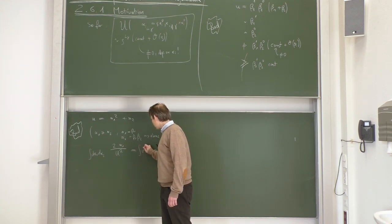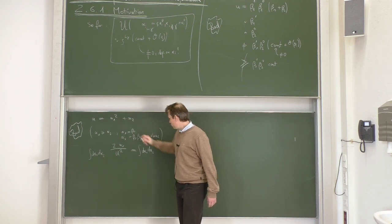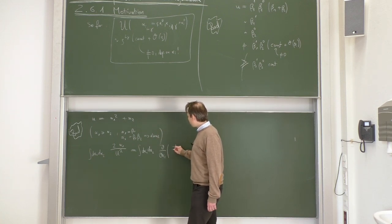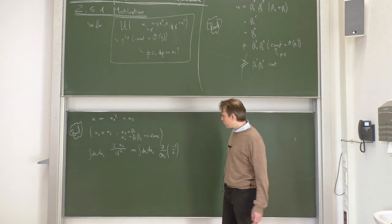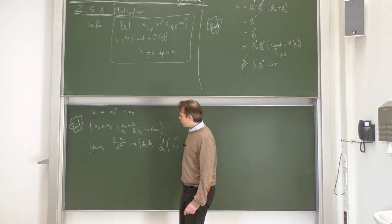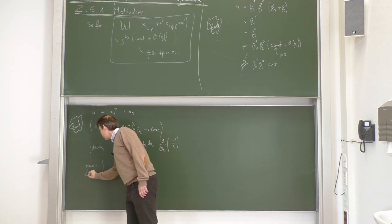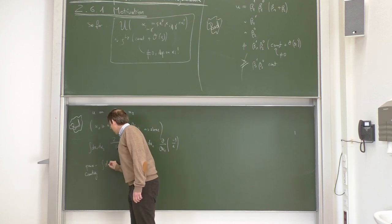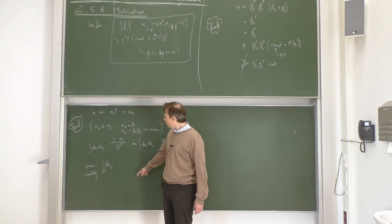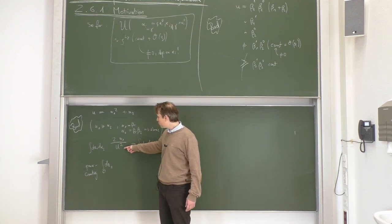It's a simple integral that we can analytically evaluate. Now, what can we see from power counting? Let's look at the α₁ integration down to zero. If α₁ becomes small, u goes to a non-vanishing constant α₂, so 1/u² doesn't diverge and the numerator goes to zero — so this is finite power-counting-wise.